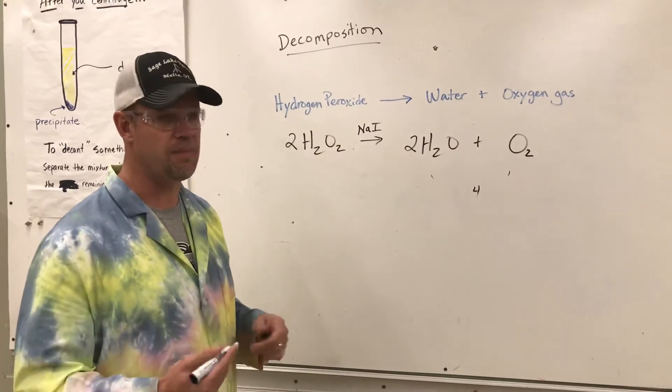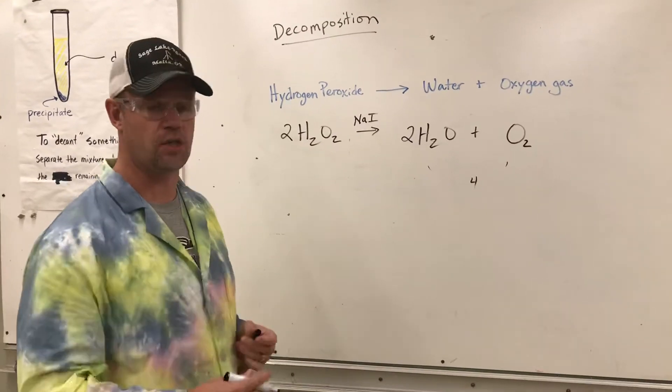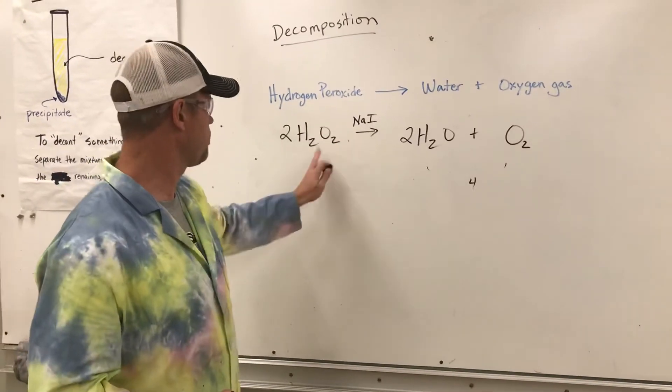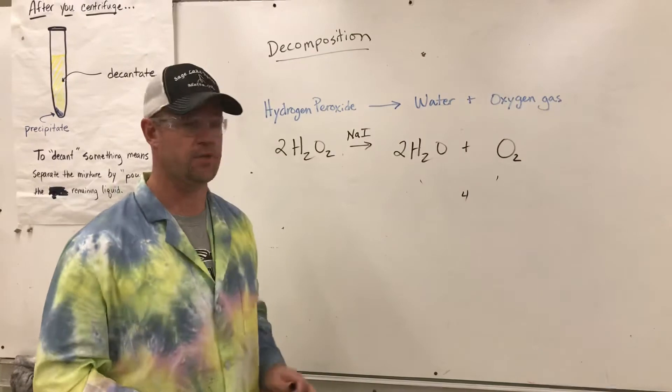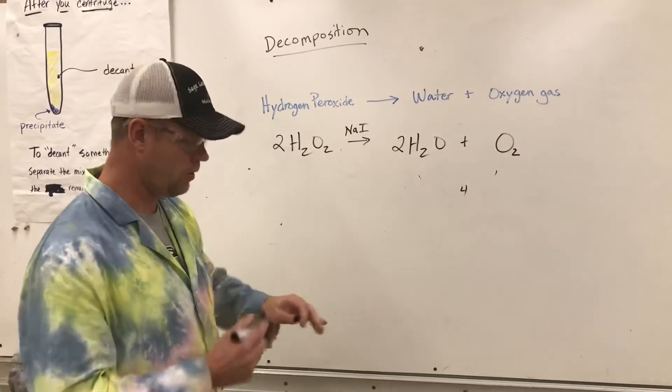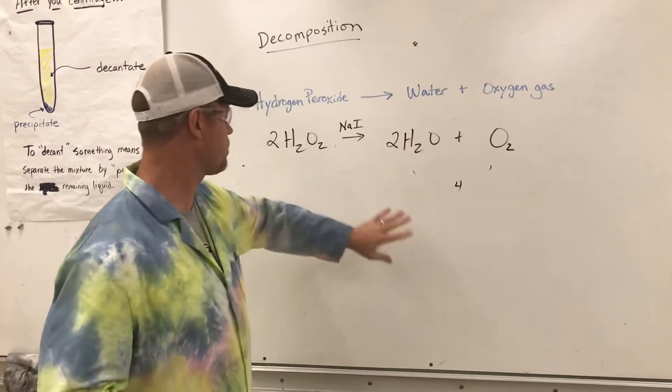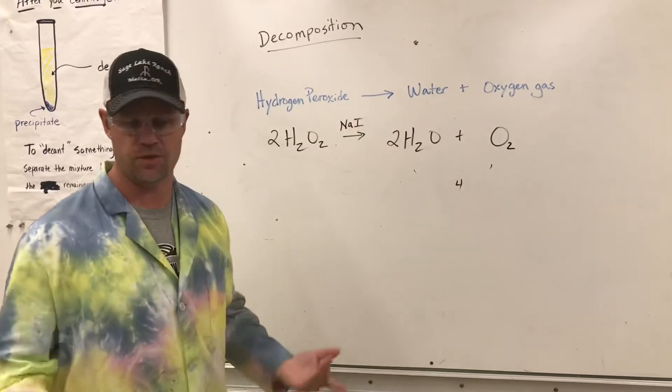It's kind of like adding some activation energy. It just kicks it off and gets it going faster. But it doesn't actually become part of the reactants or the products. So when you see something written over an arrow, you can pretty much ignore it as far as the reactants and products are concerned. It's just something we need there to make the reaction go.